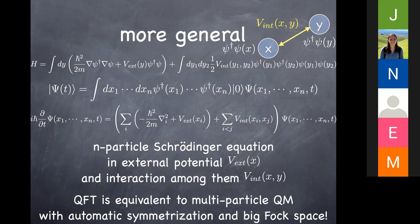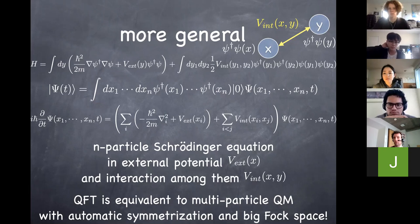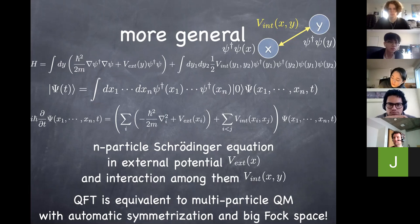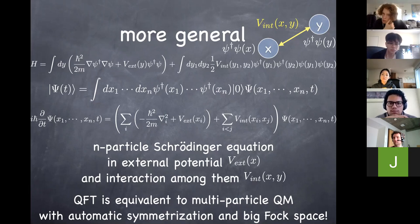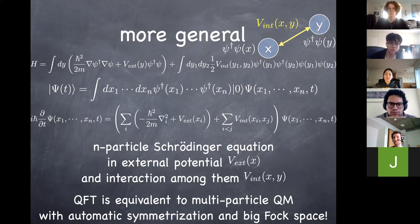Student question (Shirad): How is the Fock space different from just a tensor product of Hilbert spaces? It's actually a direct sum of Hilbert spaces. The Hilbert space with no particles is one-dimensional — just the vacuum state. The Hilbert space with one particle is infinite-dimensional: ψ†(x)|0⟩ for all x in space. The Hilbert space with two particles consists of ψ†(x₁)ψ†(x₂)|0⟩ — that's infinite-dimensional squared. Each Hilbert space is defined by a specific number of particles. You take the direct sum — not the tensor product — of all these Hilbert spaces. That's the Fock space.